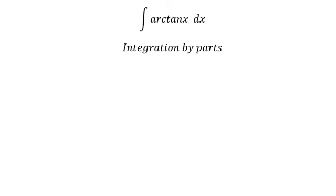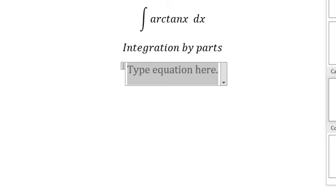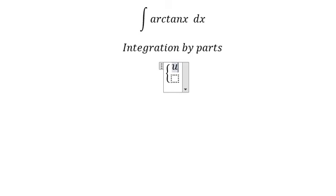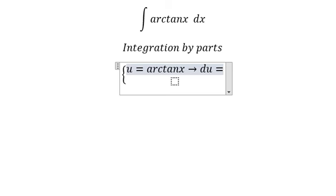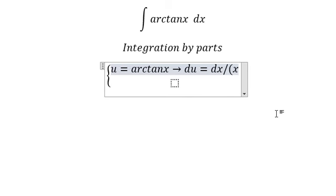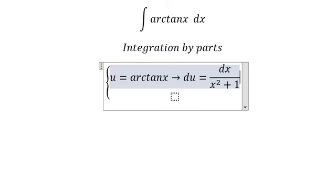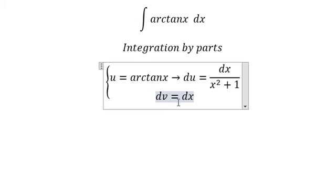So I need to put u equals to arctan of x. If I do first derivative for both sides, we have du equals to dx over x squared plus 1. And then we have dv equals to dx. The integration of this one, we have v equals to x.